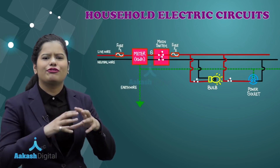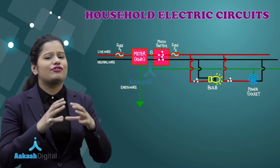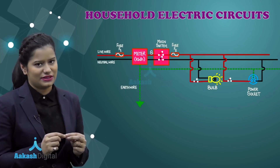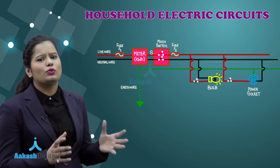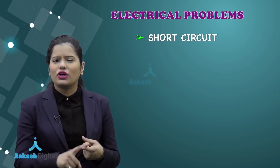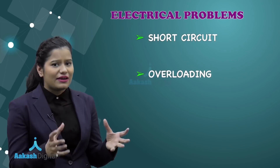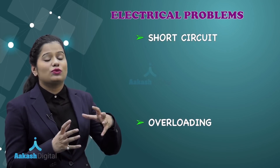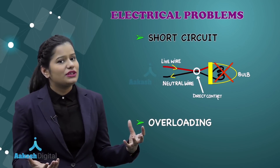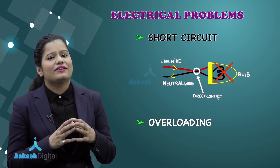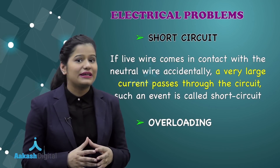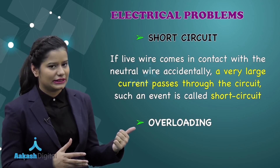We have seen in domestic circuits how different appliances are connected to these wires. We also discussed electrical problems — specifically short circuiting and overloading. Short circuiting occurs when the live wire comes in contact with the neutral wire accidentally, causing a large amount of current to flow through the circuit.